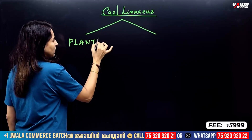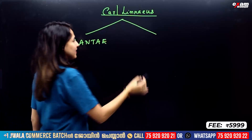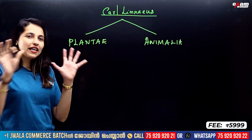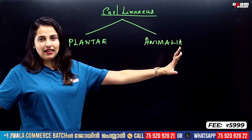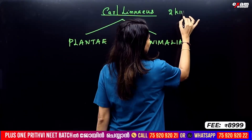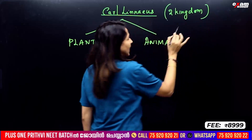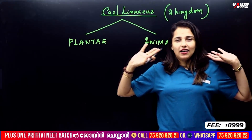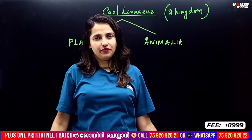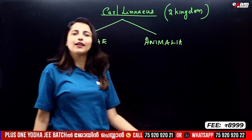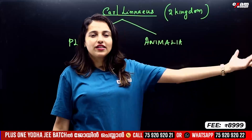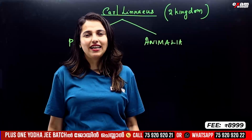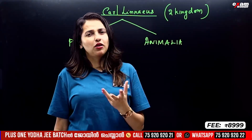Here are two kingdoms. He classified the first as the Plant Kingdom, and the second kingdom is the Animal Kingdom — that is Animalia. One is complete organisms: one is Plantae, the other is Animalia. The two kingdoms classify all organisms, so organisms are just linearized into two kingdoms. There are a few plants and a few animals, then we have to classify using one criteria as well.